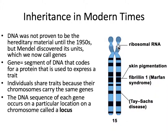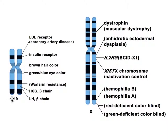The DNA sequence of each gene occurs at a particular location on a chromosome, and that location is called a locus. For example, at one locus is a gene that makes a large protein called fibrillin 1 — a mutation right at this locus could result in Marfan syndrome, characterized by heart problems and vision problems. On chromosome 19, for example, one locus carries the gene for brown hair color, and another locus carries the gene for green or blue eye color. On the X chromosome, a mutation at a particular locus can cause hemophilia.